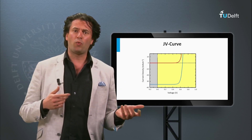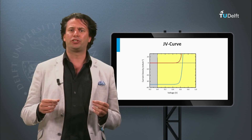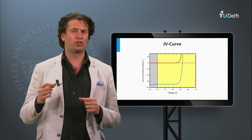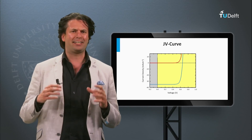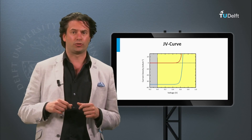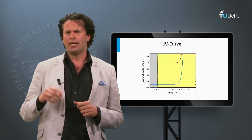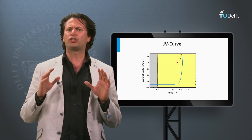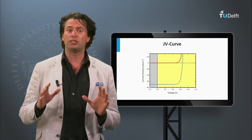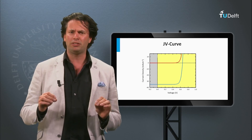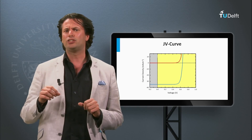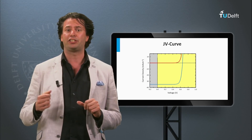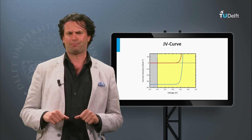How can we determine the performance of a solar cell? In the previous block we introduced the JV curve of an ideal solar cell and its corresponding electrical circuit. In this block we are going to discuss the external parameters that determine the light-to-electricity conversion efficiency of an ideal solar cell.